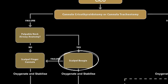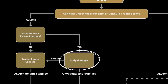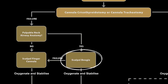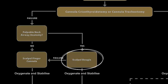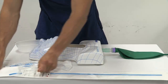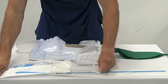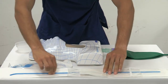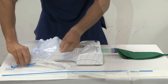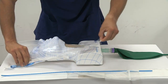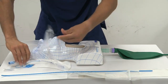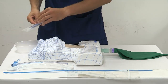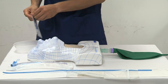If the airway anatomy is palpable, the scalpel-bougie technique should be carried out. A standard Frova bougie with a 15mm RapiFit connector, a size 6 endotracheal tube, and a size 10 scalpel blade are required for this technique.